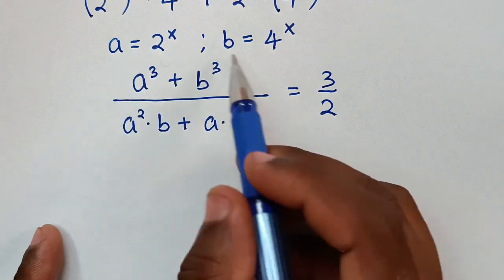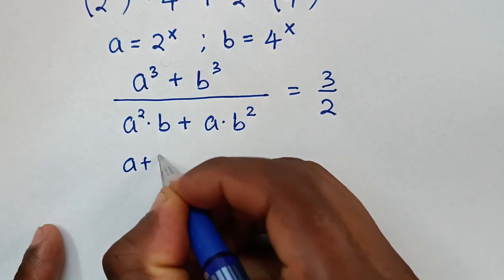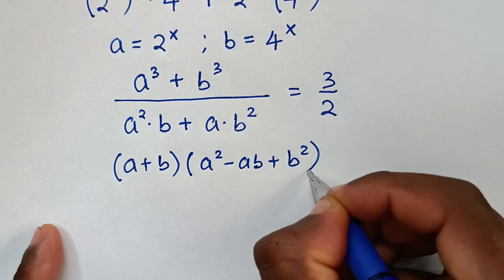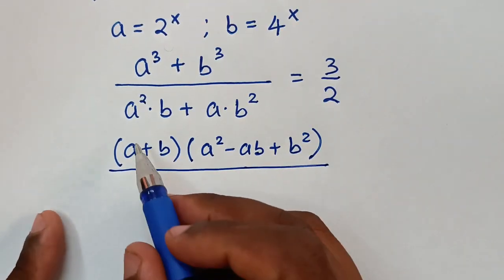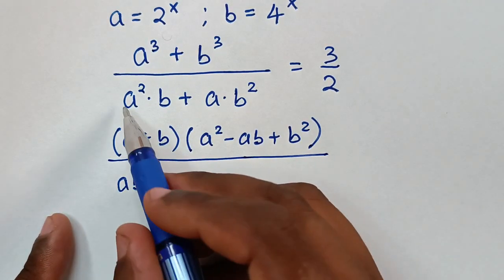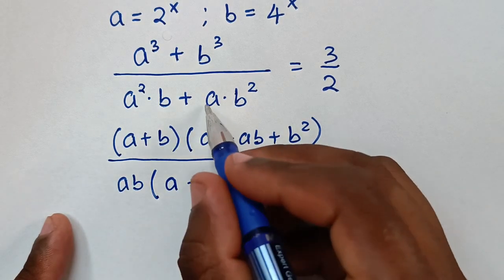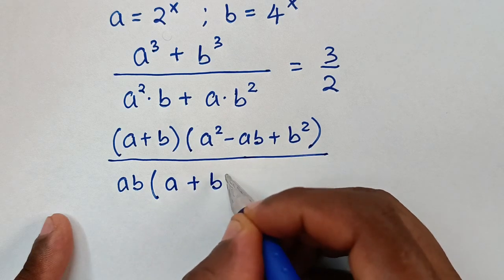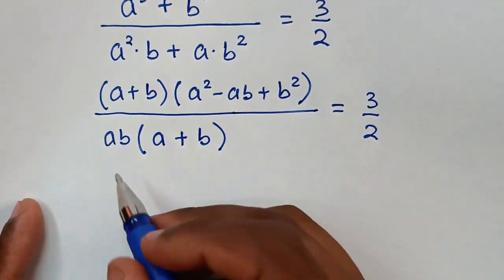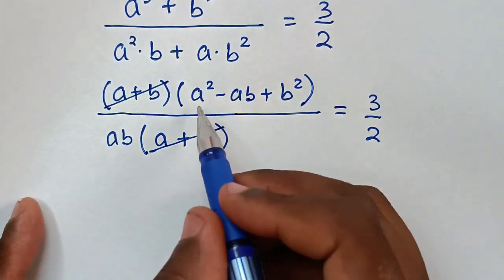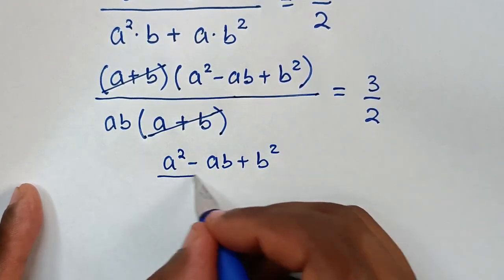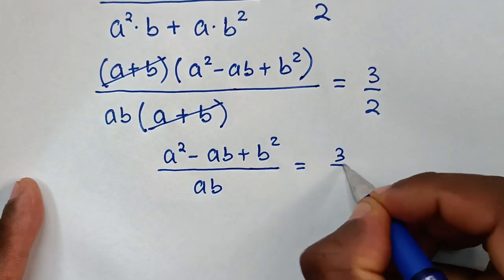We apply the sum of cubes rule: a^3 + b^3 = (a + b)(a^2 - ab + b^2). In the denominator, ab is common, so we factor it out: ab(a + b). Then we cancel (a + b) from numerator and denominator, giving (a^2 - ab + b^2) / (ab) = 3/2.